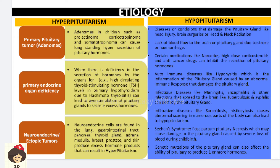A primary pituitary tumor — that is, a tumor in the pituitary gland — can be a prolactinoma, corticotropinoma, or somatotropinoma. In these conditions, the tumor cells also produce more hormones, which can result in hyperpituitarism.